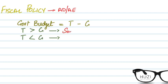A budget surplus means an excess of central government tax receipts over its spending. If it's the other way around — if net taxes are less than government expenditure — it's called a budget deficit, which means an excess of central government spending over its tax receipts.